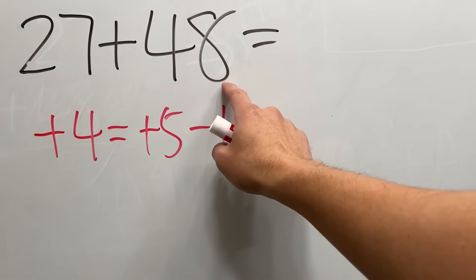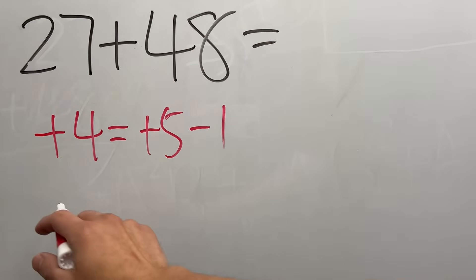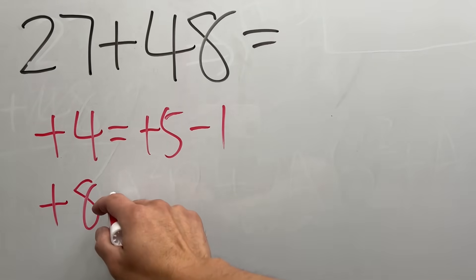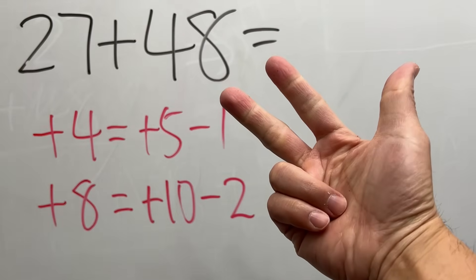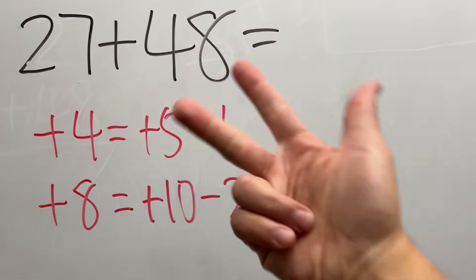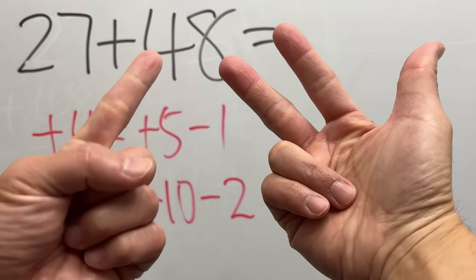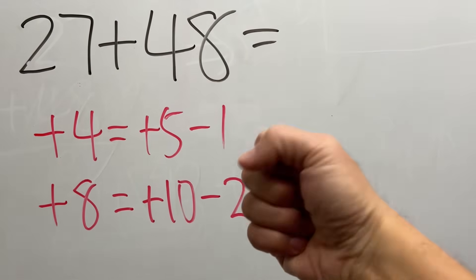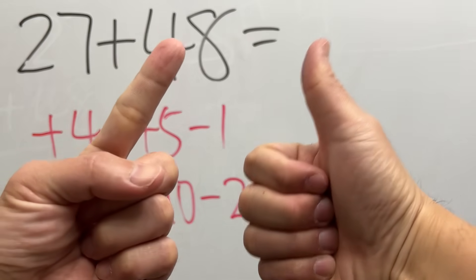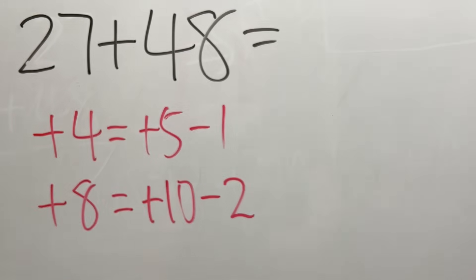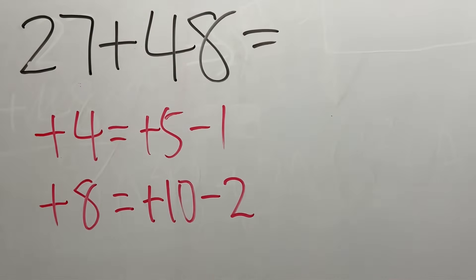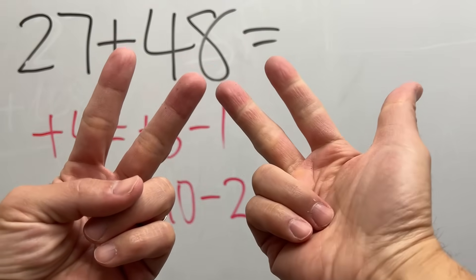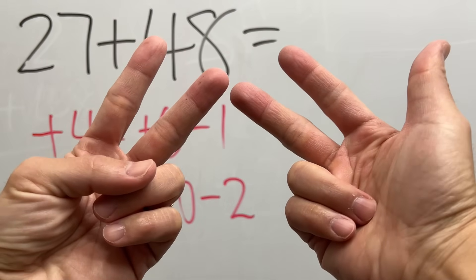Now seven plus eight. What do I mean by plus eight? Plus eight is the same as plus ten and then minus two. Seven plus eight is to me 15, like this. Now let's put everything together: 27 plus 48.